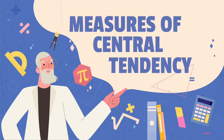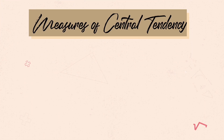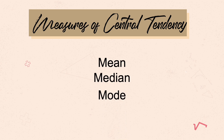Welcome to the new discussions on statistics. For today, we'll have the measures of central tendency. These are the mean, median, and mode. These three measures of central tendency pertain to only one term, and that is average.